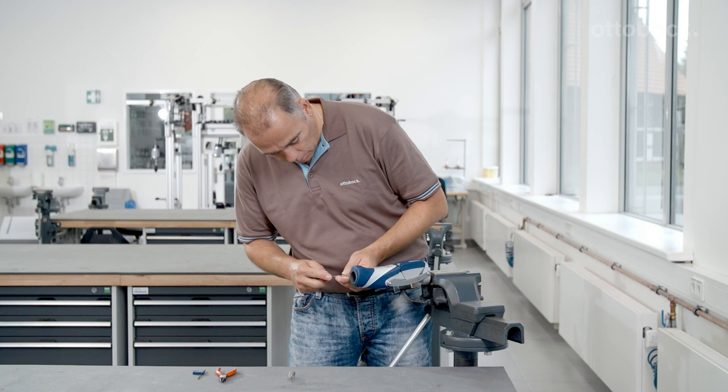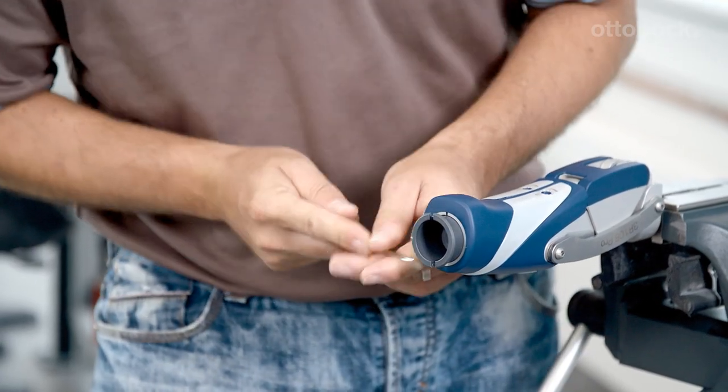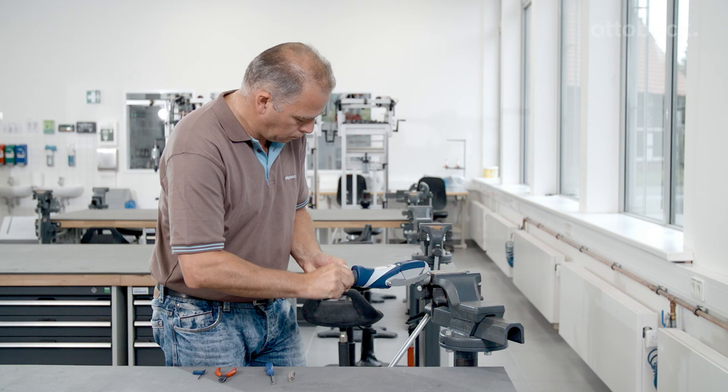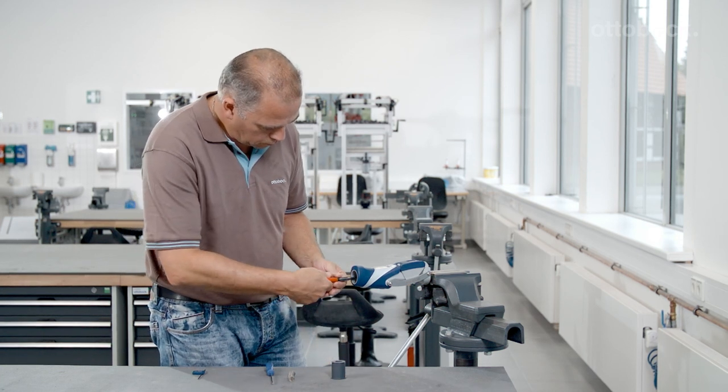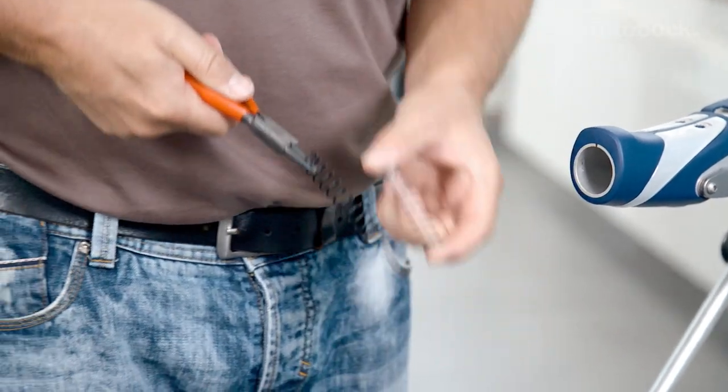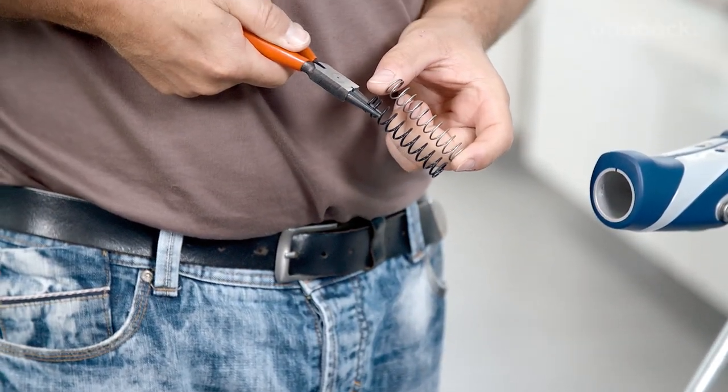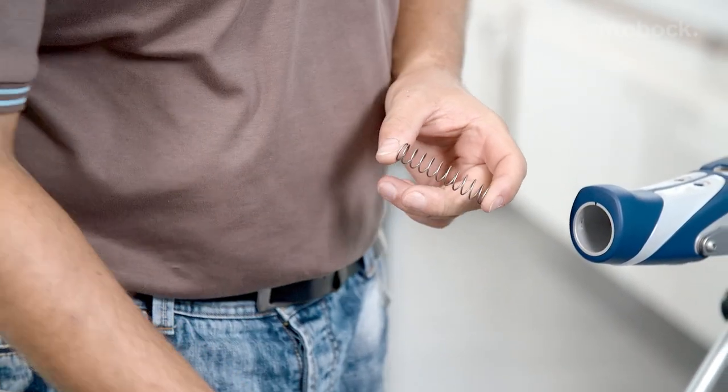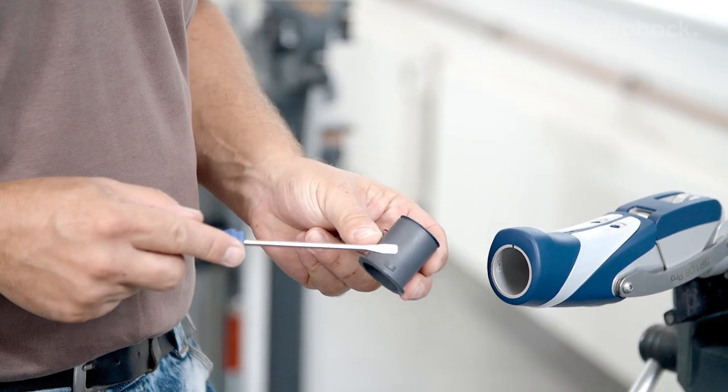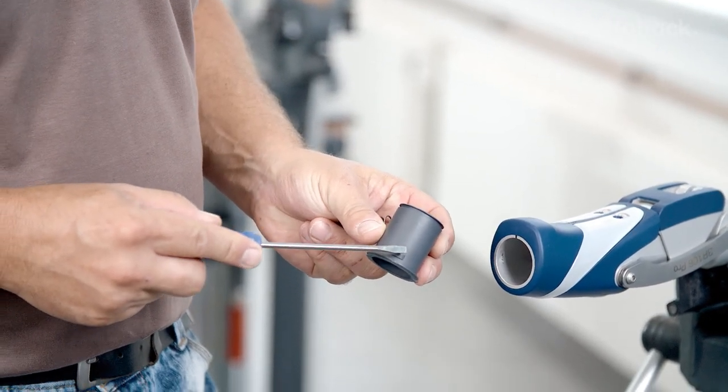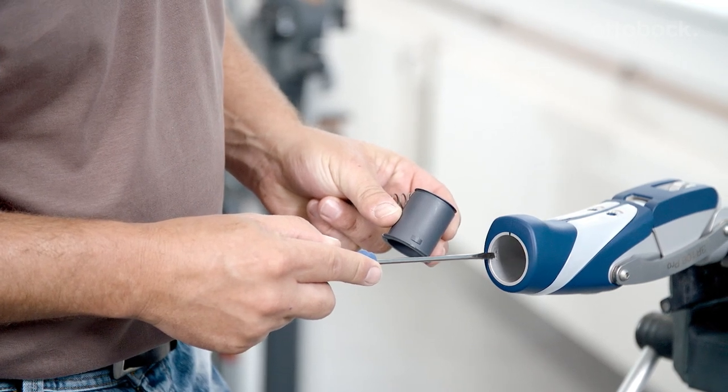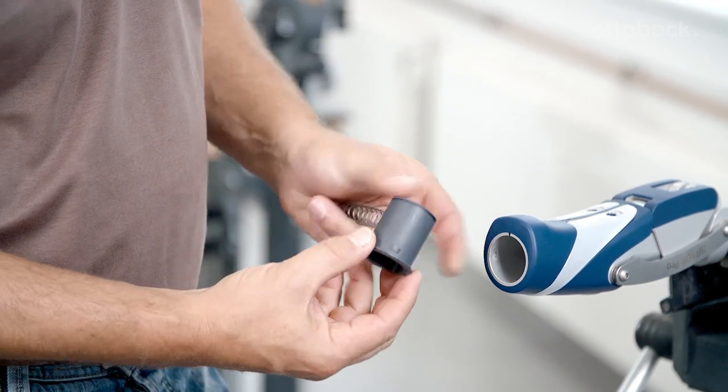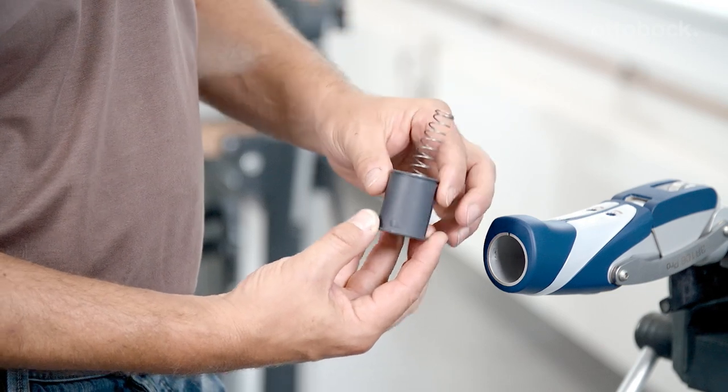The integrated extension assist spring is part of the swing phase control mechanism and ensures extension of the prosthetic knee joint. If required, the installed strong compression spring can be replaced with the weak compression spring or omitted entirely. To prevent injuries due to falling, this is only permitted if the patient is able to bring the prosthetic knee joint to full extension prior to heel strike in all situations.